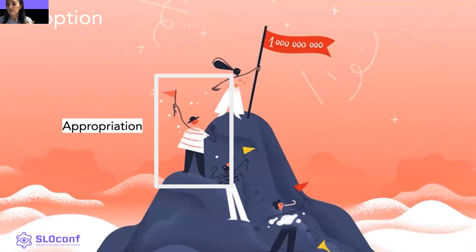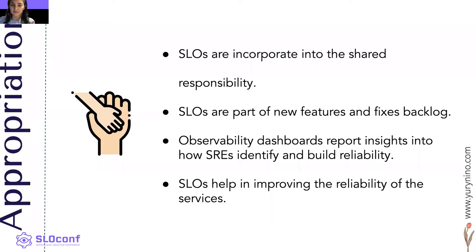At the third level, I am going to talk about appropriation. In this stage, we want developers to be able to launch code without requiring a team of dedicated operations engineers. This requires generating a culture in which developers do more than just deliver code. At this level, SLOs are part of the new features and fixes backlog, which can include fixes to software, increased telemetry to improve observability, or improvements to automation to reduce coverage time. We have observability dashboards that report insights into how SLOs identify ambient reliability and help improve the reliability of services.